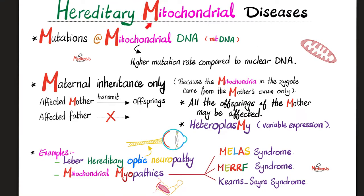Now on to today's topic: hereditary mitochondrial diseases. Where's the problem? It's a mutation in the mitochondrial DNA. The mitochondrial DNA has a higher mutation rate compared to nuclear DNA because the proofreading mechanisms are more robust in nuclear DNA than in mitochondrial DNA. The mitochondrial DNA is more vulnerable to mutations and defects. The affected mother can pass down this disease to all her offspring, males and females. But if daddy is affected, daddy cannot give a mitochondrial disease to his children — it's impossible.